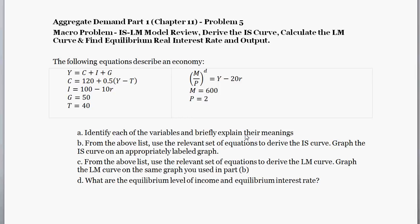Hello and welcome to another macro problem. Here we're going to be dealing with the ISLM model. One way ISLM is useful is that it ties together two parts of the economy we think are particularly important: the trade-off between the consumption of goods and services and the desire to save and invest — that's the IS curve — and the market for money, reflecting the supply and demand for money in the economy, which is the LM curve.